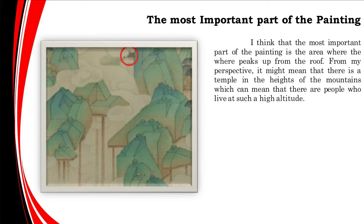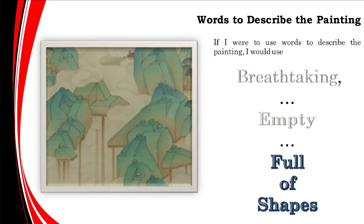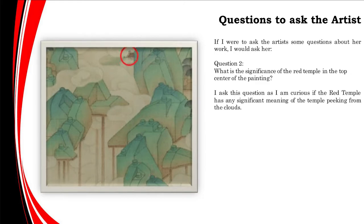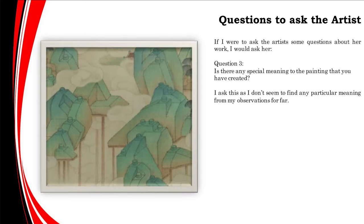From my perspective, it might mean that there is a temple in the heights of the mountains, which might mean there are people who live at such a high altitude. If I were to use words to describe this painting, I would use breathtaking, empty, and full of shapes. If I were to ask the artist some questions, I would ask her what made her decide to make the mountains out of Legos, make the tree branches out of pipes, and the tree leaves look like fans. What is the significance of the red temple in the center top of the painting? Is there any special meaning to the painting that you have created? I ask this as I don't seem to find any particular meaning from my observations so far.